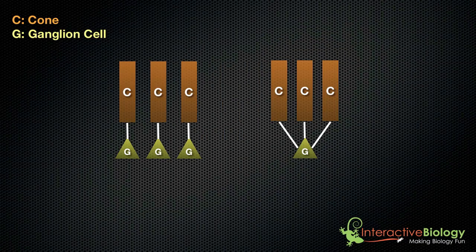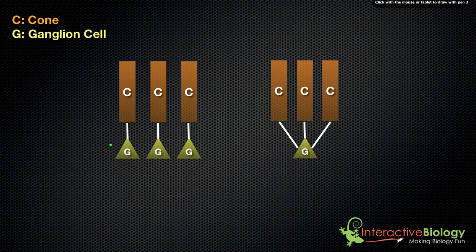With that concept, let's go on now and talk about the receptive field of a ganglion cell. And to illustrate that, I've simplified the drawing of a ganglion cell. So here we have a ganglion cell, and here we have a cone. So these are all cones.